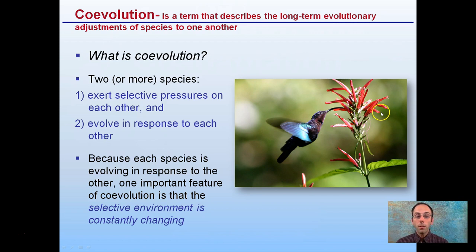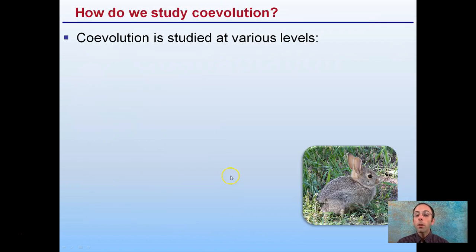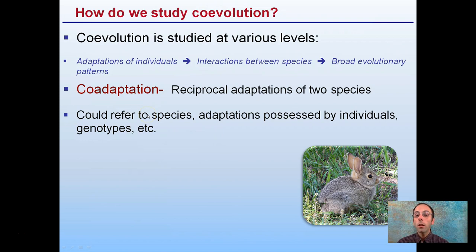Because each species is evolving in response to the other, one important feature of co-evolution is that the selective environment is constantly changing to allow this to occur over a long period of time. Co-evolution is studied at many levels: adaptations of the individuals, interactions between species, and also broad evolutionary patterns.